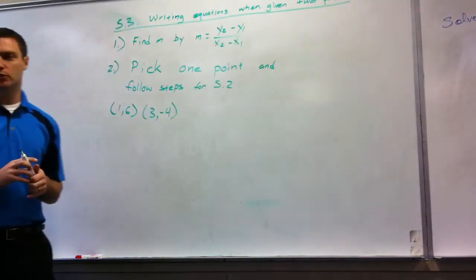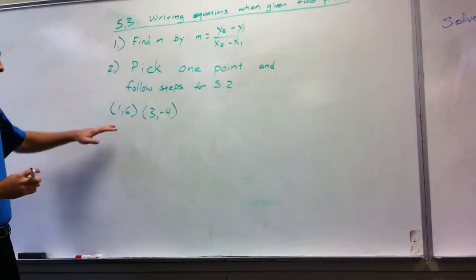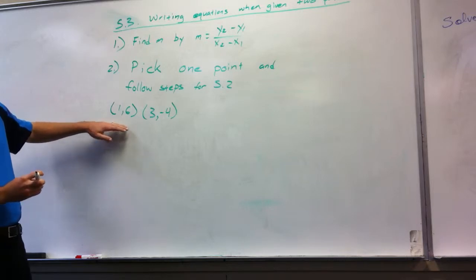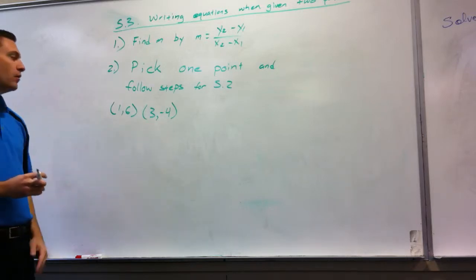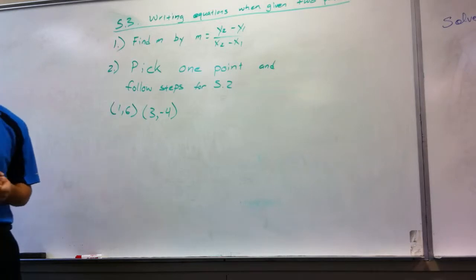Okay, so we're writing equations when given two points. We're asked to write the equation to the line that passes through (1,6) and (3,-4).